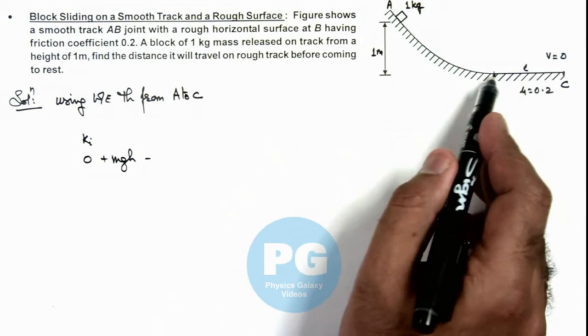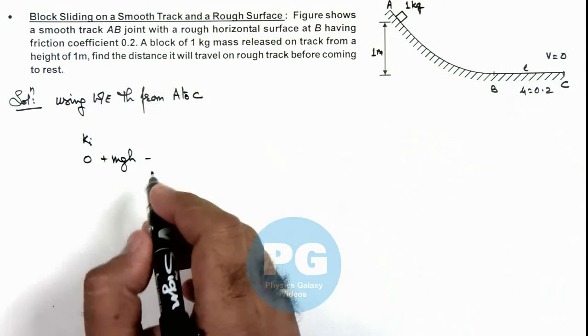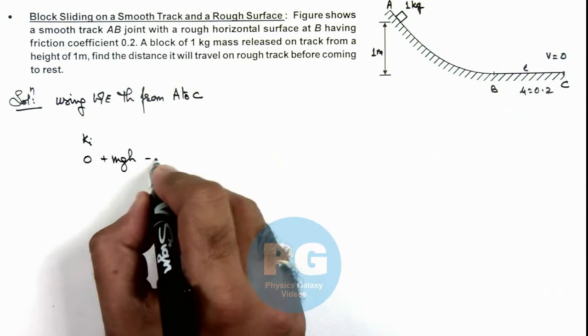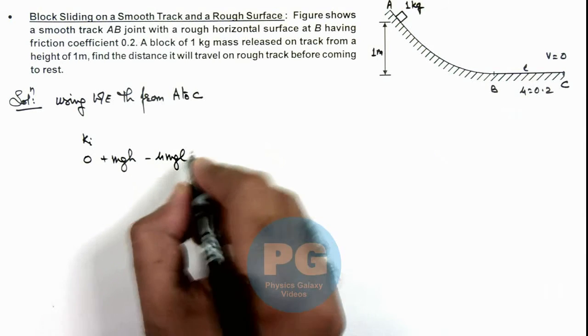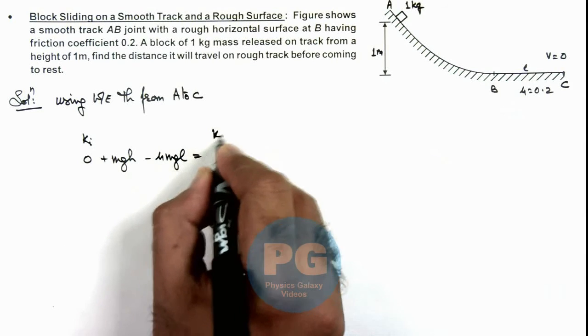Minus the work done by friction in displacement on rough surface is mu m g l, and the final kinetic energy is again equal to zero.